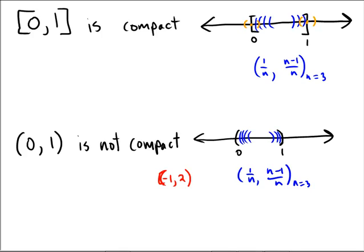And as you union these up, union from n equals 3 to infinity of these sets (1/n, (n-1)/n), you are indeed going to get the entire space from 0 to 1.